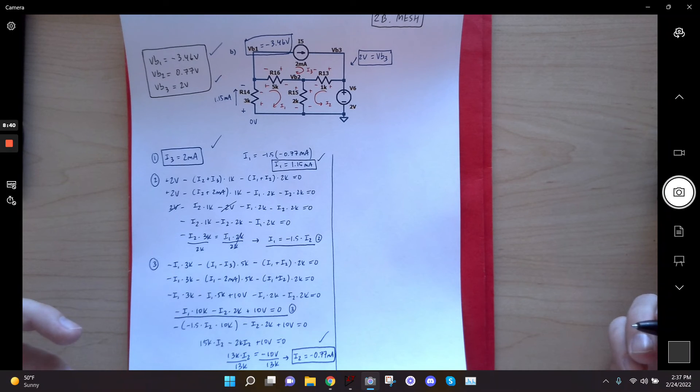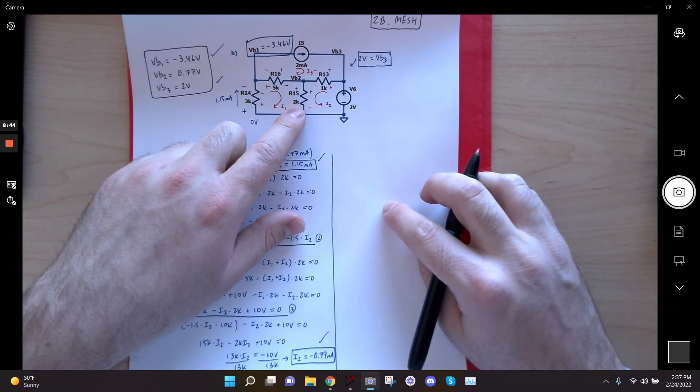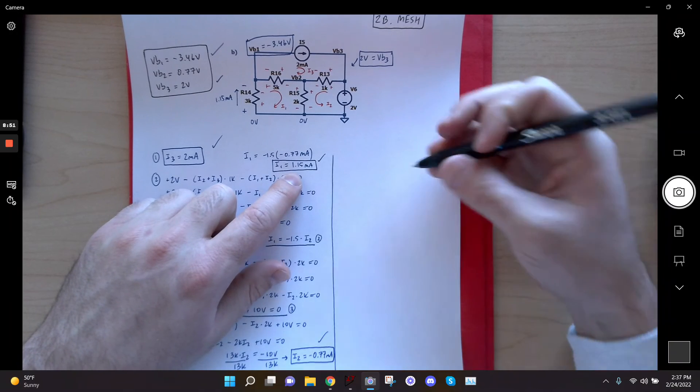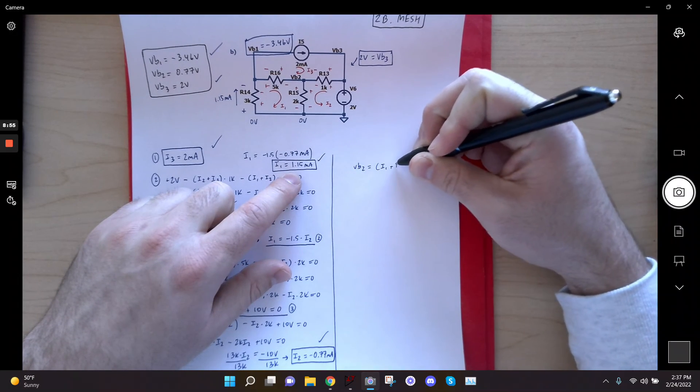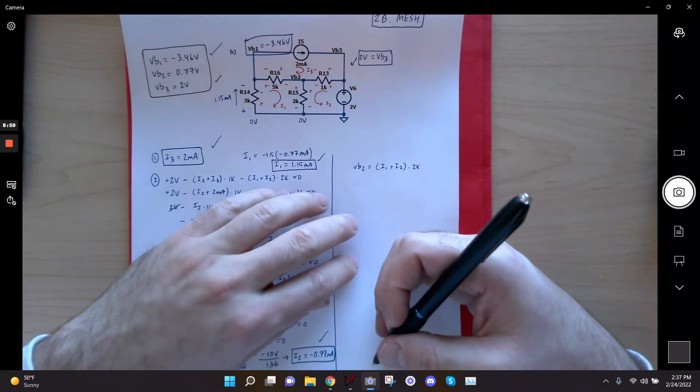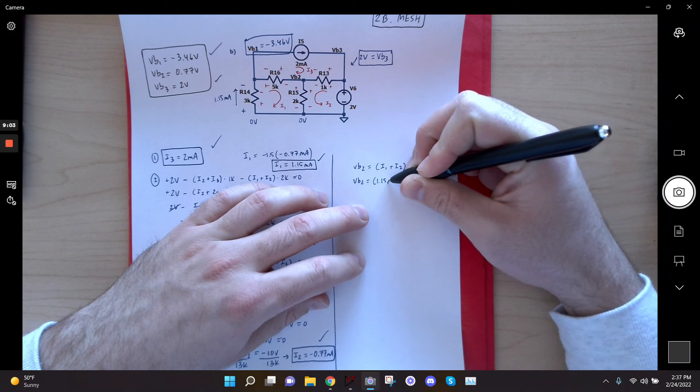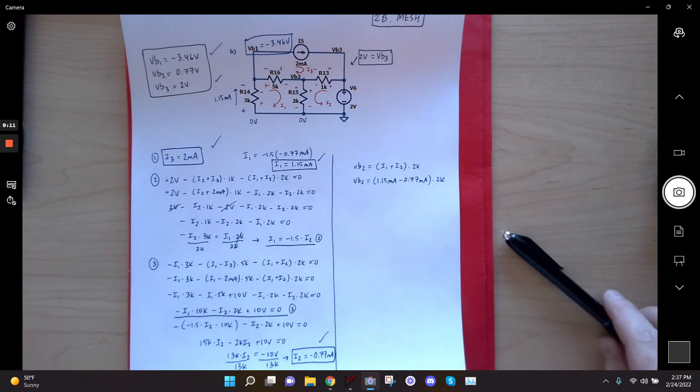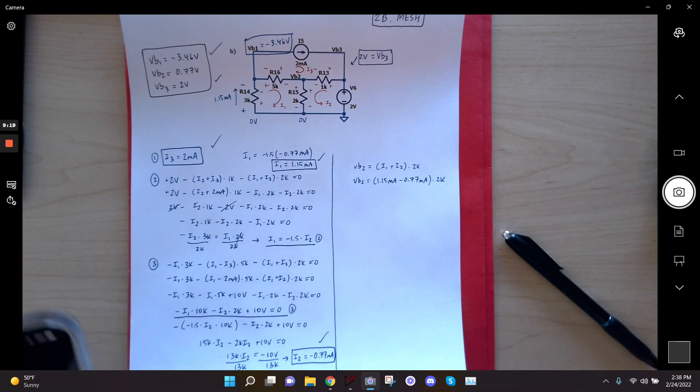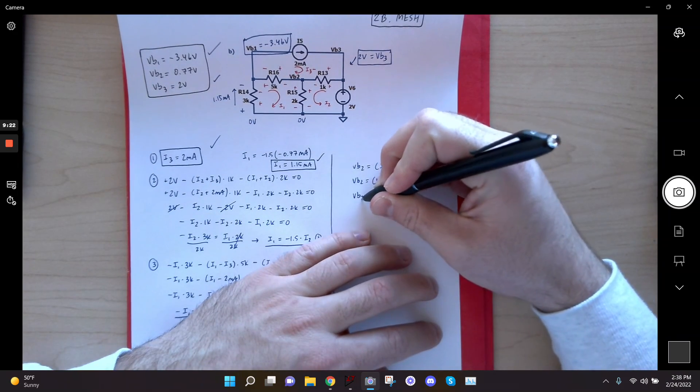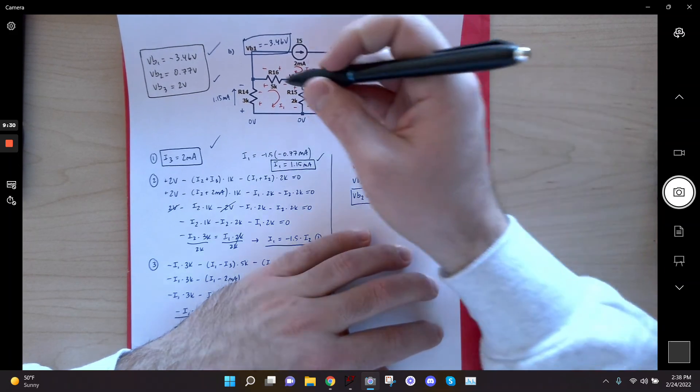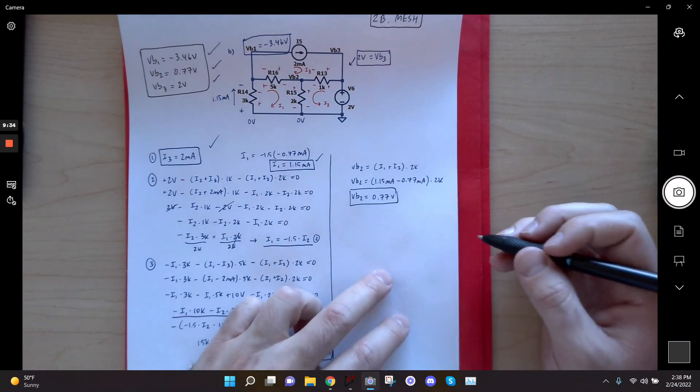Okay. So now the last one I need to find is I need to find VB2. And the current flowing through this 2K can be used to find VB2 because I know that this is 0 volts, right? So the current is I1 plus I2. Well, I1 is 1.15. So let's say VB2, again, is equal to I1 plus I2 times 2K. All right. Well, that's going to give me a 1.15 milliamps minus a 0.77 milliamps times 2K because I2 is negative. So let's go ahead and do 1.15 minus 0.77. And then I multiply it by 2. And that gives me 0.76. With rounding, that's literally about the same as 0.77 volts, which is what Spice got. So I can check that off. And now that is this problem solved using mesh.